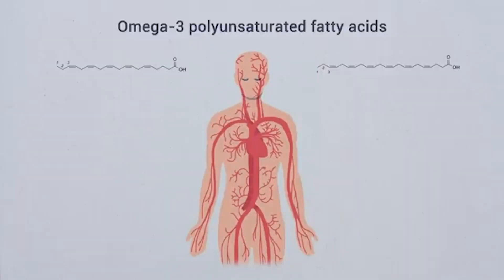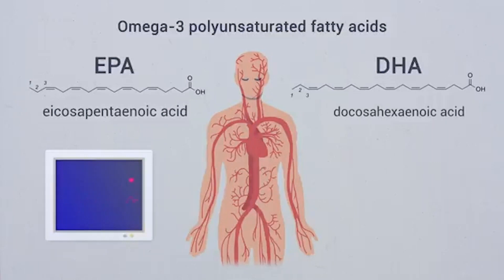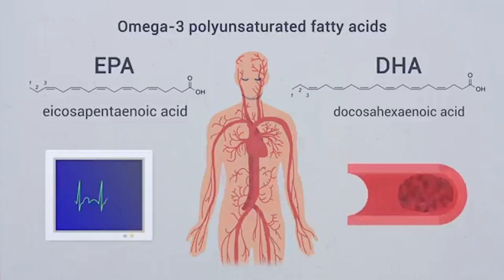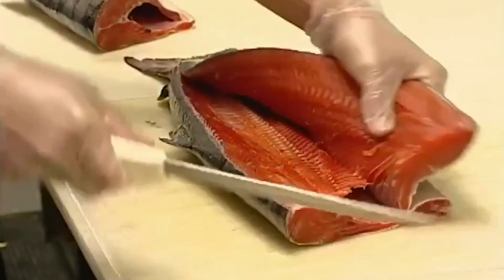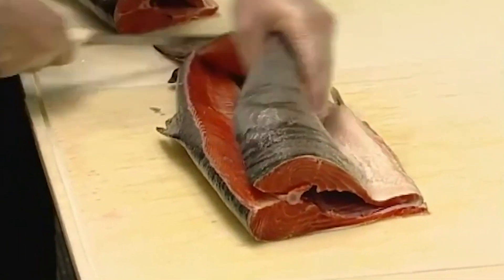There are dozens of omega-3 fatty acids, but the most well known are EPA, DHA, and ALA. EPA and DHA omega fatty acids are of animal origin and are mostly found in fish. ALA is of vegetable origin. The richest sources of omega-3 in terms of EPA and DHA are natural salmon, mackerel, tuna, bonito, horse mackerel, and anchovy.